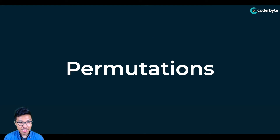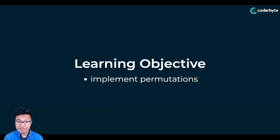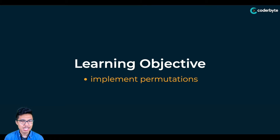So that means we have one single objective for today, and that would be to actually implement permutations code. We'll also want to do along the way is visualize the process that we can use and really understand how we can generate permutations.